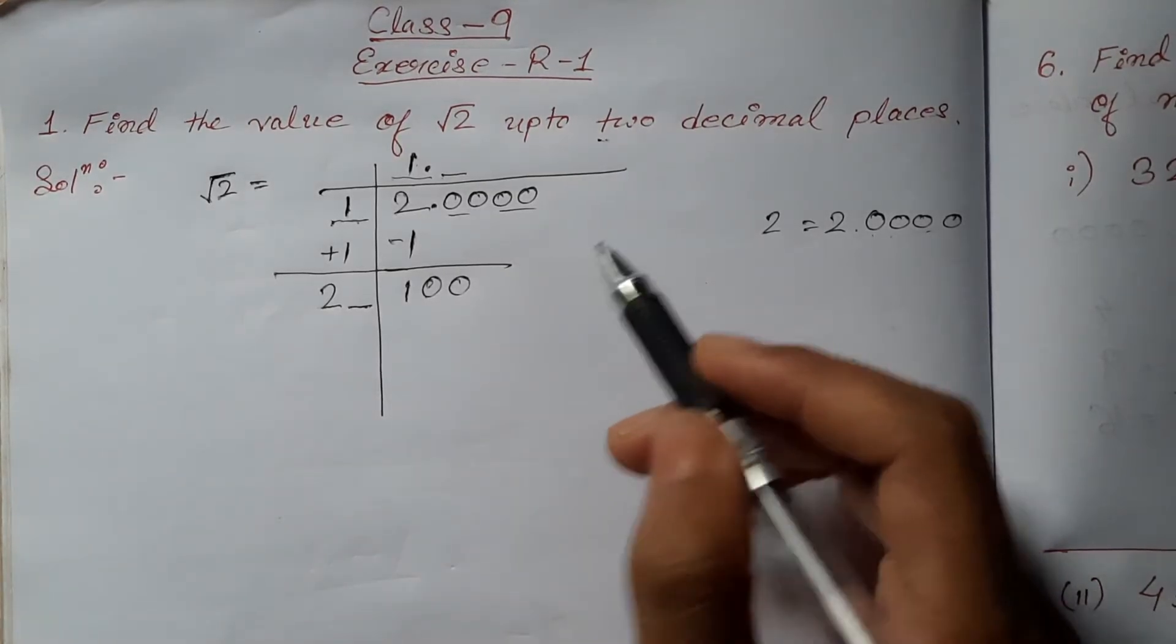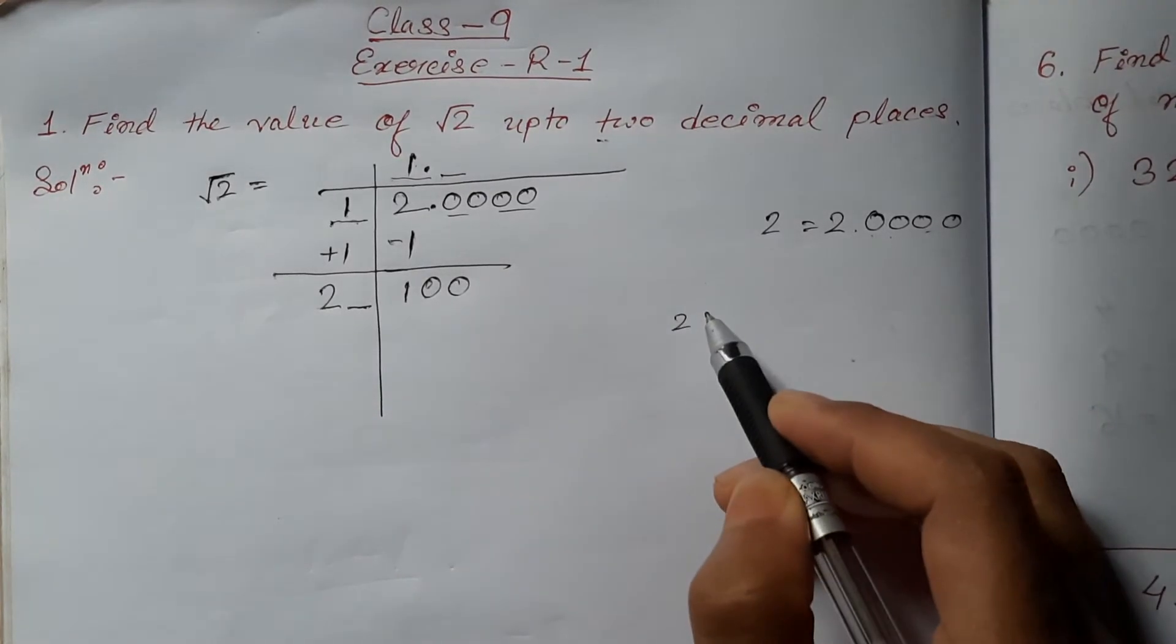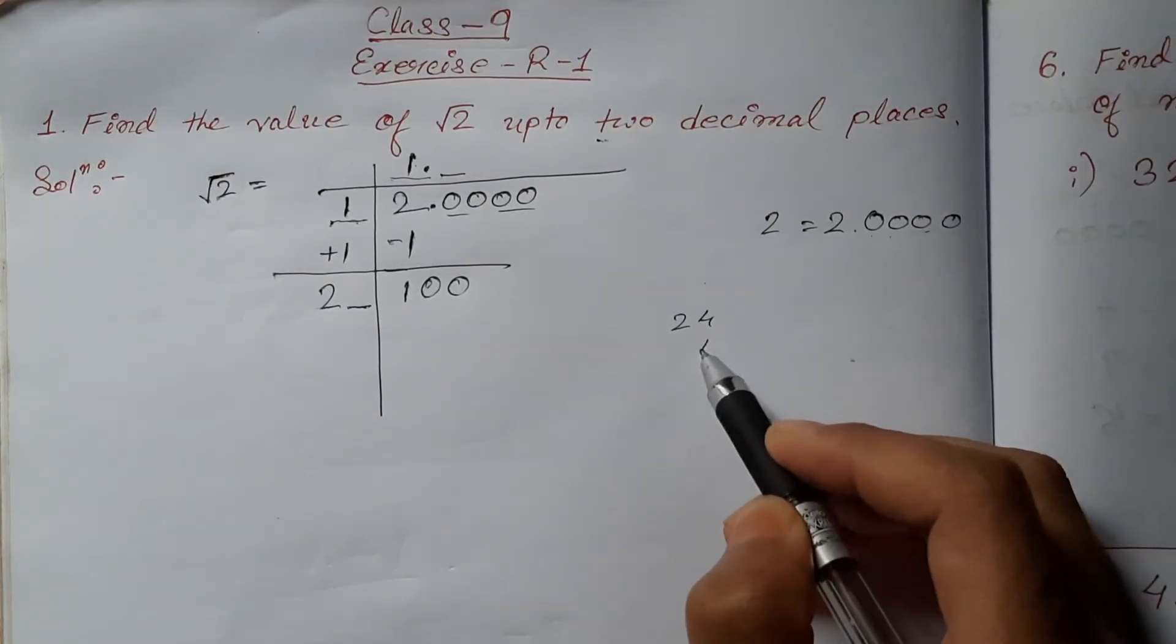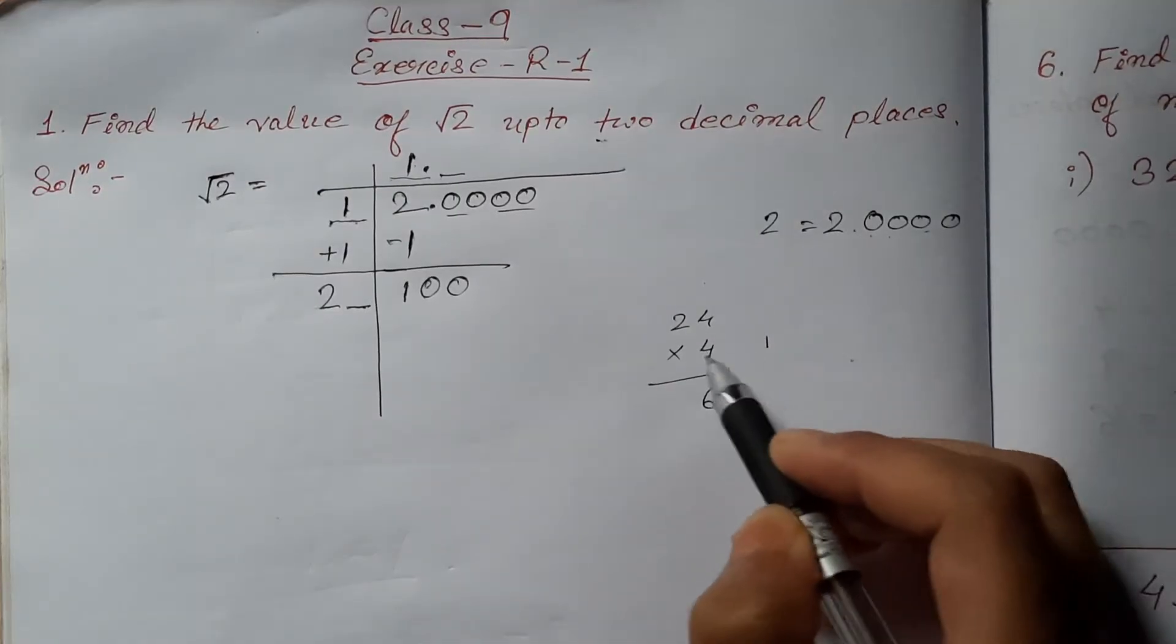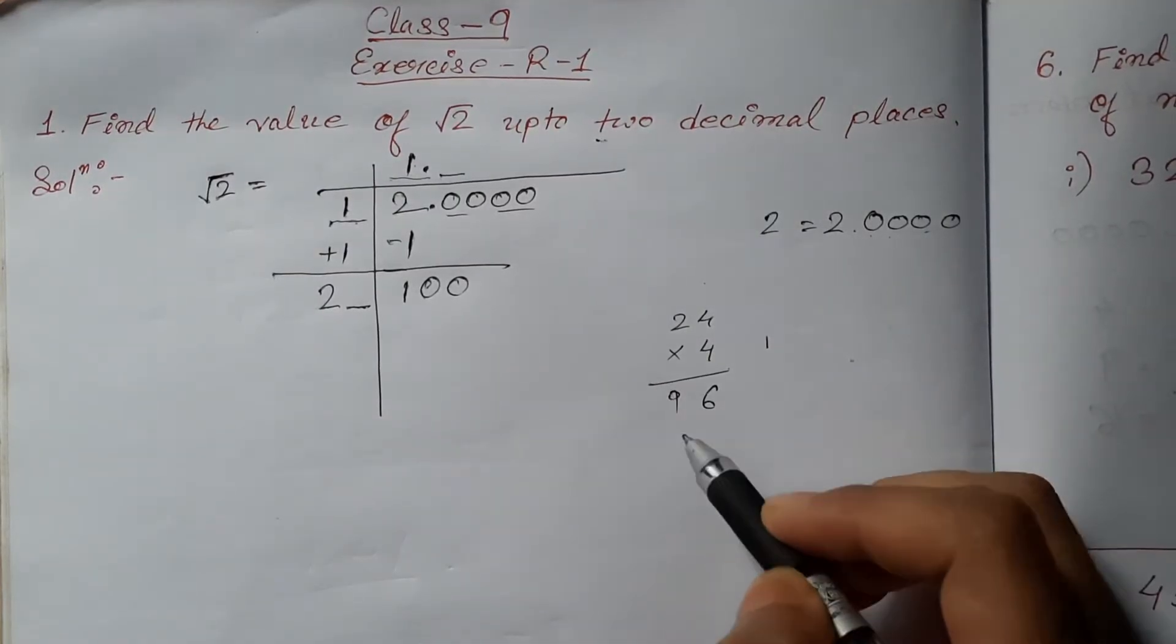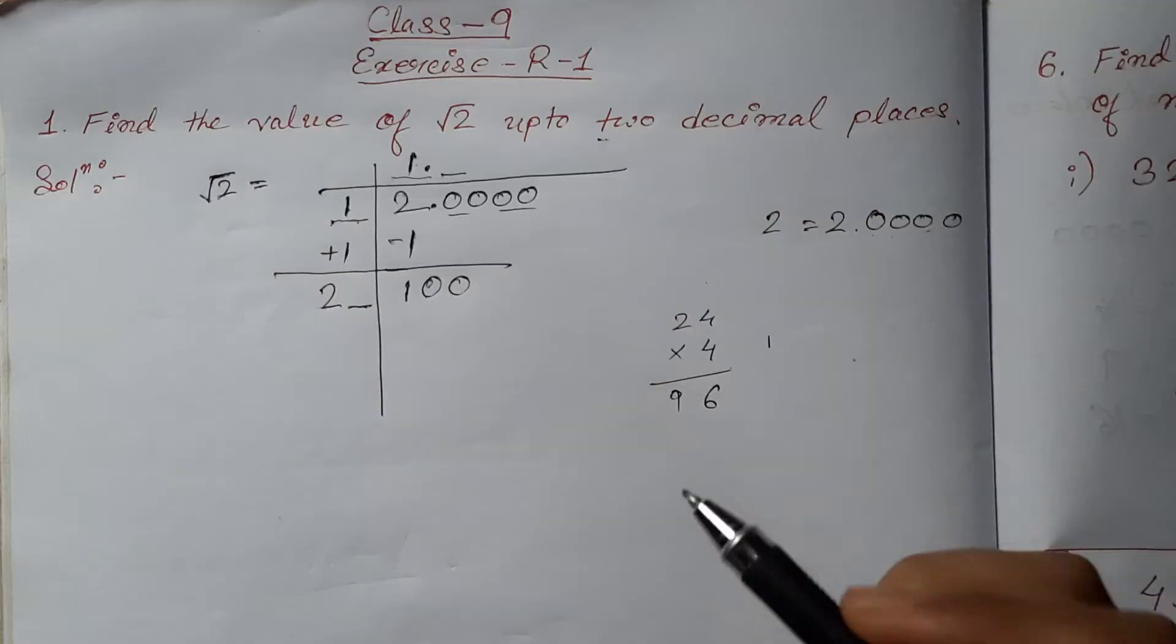So, if we take 4 after 2, and 4 in the quotient place, we will get 4 times 6 is 24, 1 carry, 4 times 2 is 8 plus 1 is 9. So 96 is just below 100, so we can take 4 here.